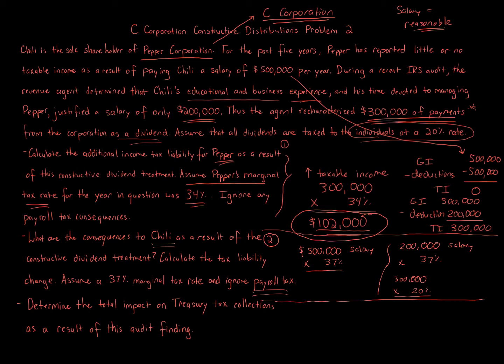Now it's going to be $300,000 times 20%, and that's how we calculate. So what we do is we calculate $500,000 times 37%. Actually, look at the difference here. Before it was $500,000 times 37%, after it's $200,000 times 37%, and then $300,000 times 20%. So you can obviously see the right side is going to be less, the after side is going to be less. The question is asking, what is the change to Chile as a result of this constructive dividend treatment, the salary being recharacterized now as not $500,000 of salary, but $200,000 of salary, and $300,000 of dividend.